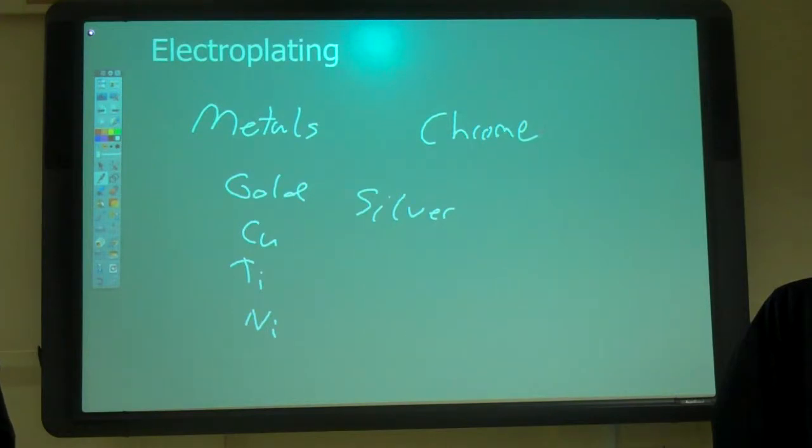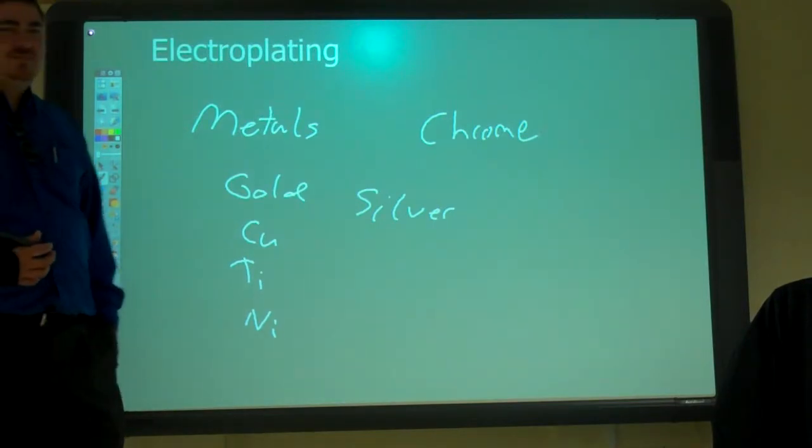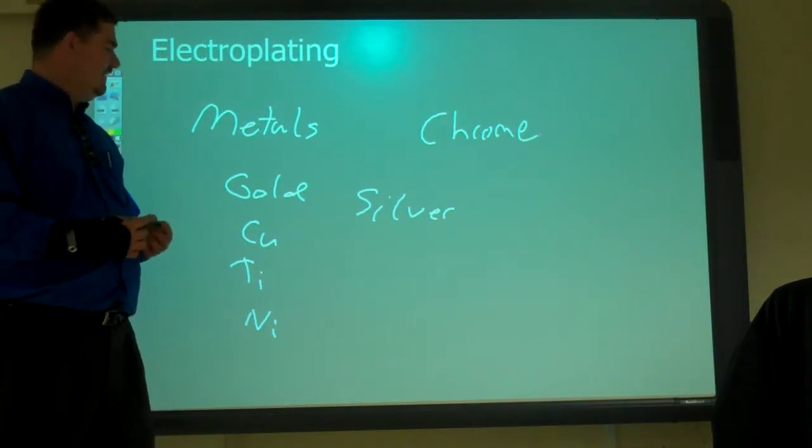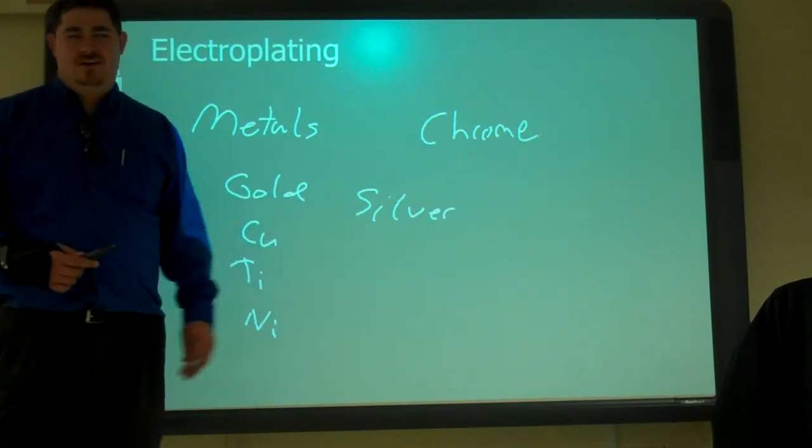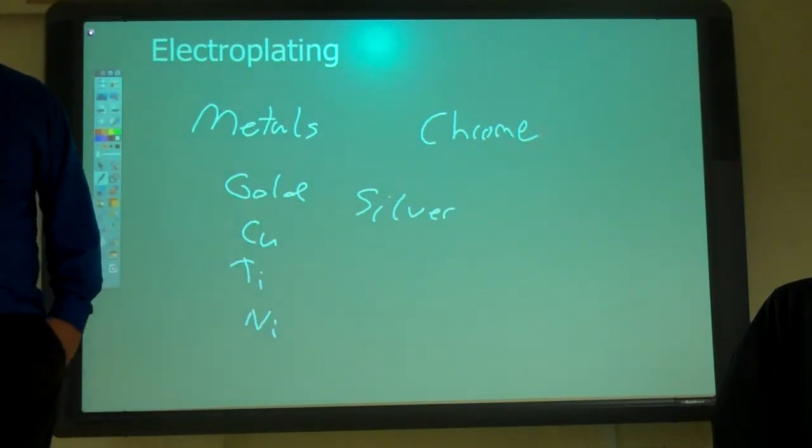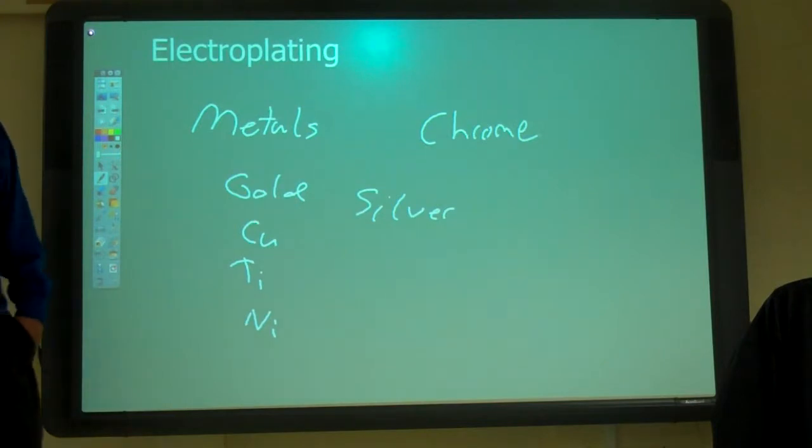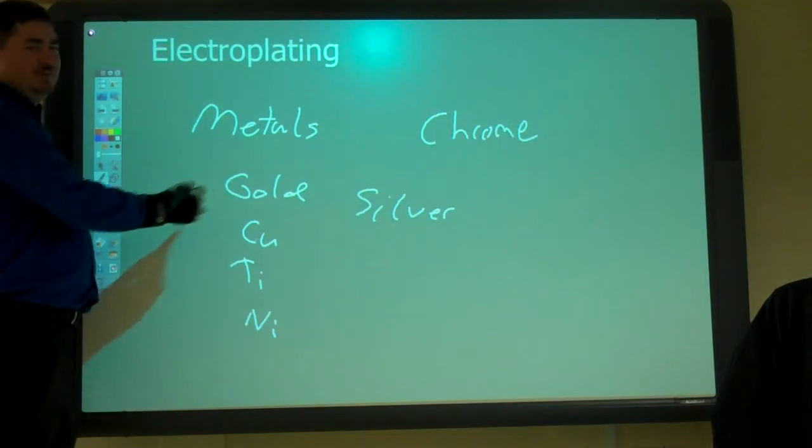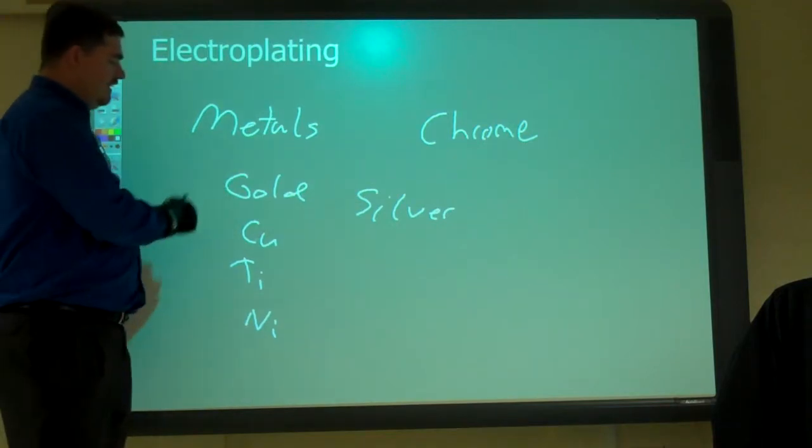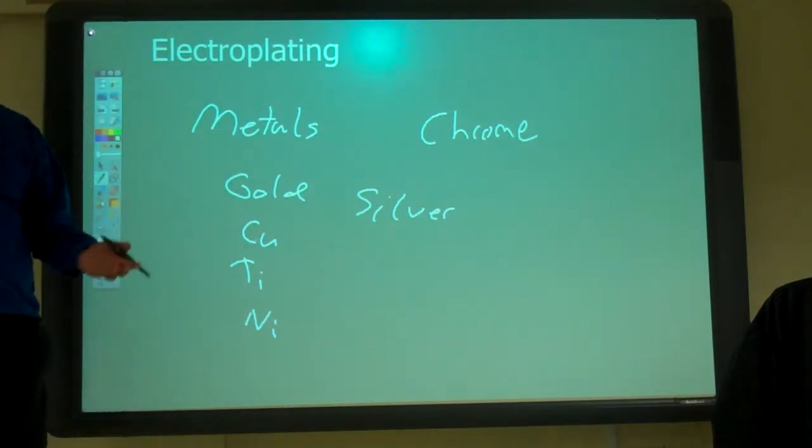So why would they gold plate stuff? Because you're a super bowler and you want everybody to know you got the money, huh? In other words, besides the appearance, so like jewelry, gold plate a lot. But why would we do gold plate something in an industrial setting? Conductive. It's conductive. Why not use copper? Because gold is more conductive. Because gold is better, right? So more conductive. So you can also use it to change your properties.